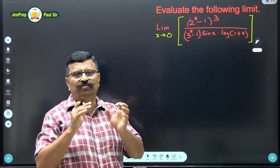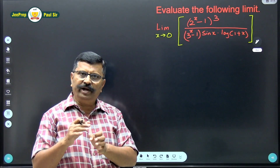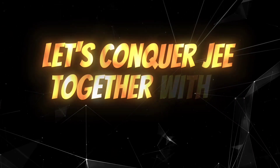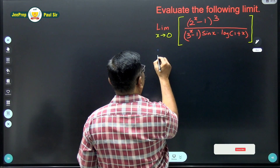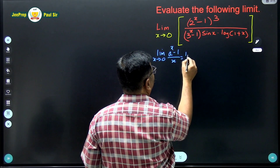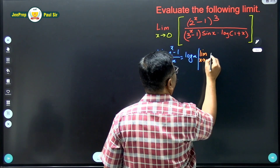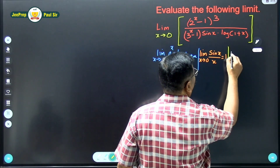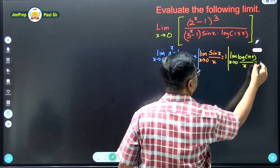First let us write the formulas which we are going to use, because the given function has to be converted into the format of these formulas. The first formula is: limit x tends to 0, (a raised to x minus 1) upon x, is equal to log a. The second formula is: limit x tends to 0, sin x upon x, is equal to 1. And the third formula is: limit x tends to 0, log(1 plus x) upon x, is equal to 1.